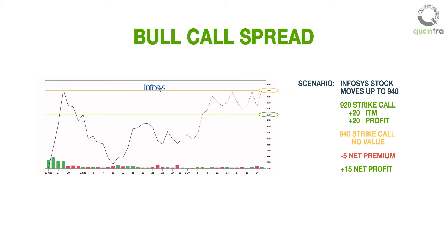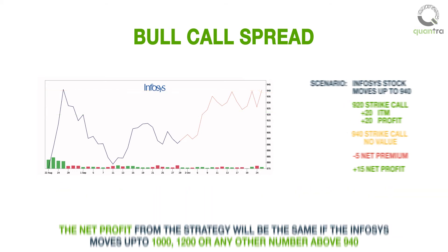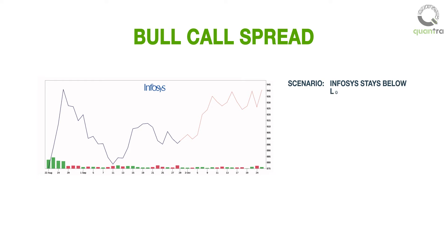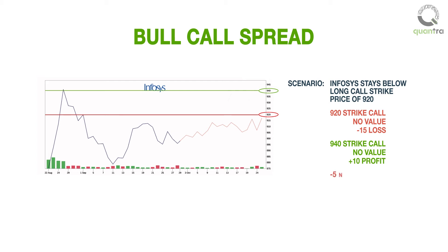This looks like a much better risk-reward as compared to only a long call strategy. The net profit from the strategy will be the same if Infosys moves up to 1000, 1200, or any other number above 940, which is the short call strike price. If Infosys stays below the long call strike price of 920, both call options with strike prices of 920 and 940 are out of the money and expire worthless. The trader lost 15 rupees — the premium paid for the long 920 strike call — but made 10 rupees from the short 940 strike call, so the net loss is 5 rupees.